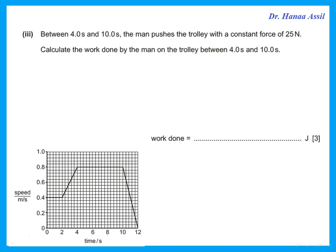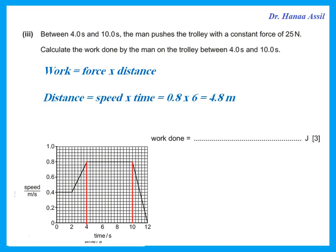Between 4 and 10 seconds, the man pushes the trolley with a constant force of 25 N. Calculate the work done. Work is force times distance. The force is 25 N. Distance is speed times time — from the graph the speed from 4 to 10 seconds was constant at 0.8, and the time is 6 seconds, giving 4.8 meters. Work = 25 × 4.8 = 120 joules.